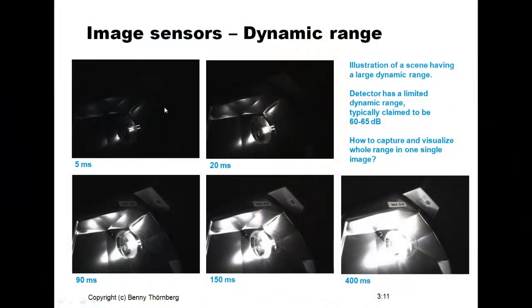To further illustrate this problem, I have chosen a more extreme exposure situation showing a scene of a halogen lamp. What we want to see is the filament inside the light bulb and its structure, while at the same time being able to read the text on the labels and see other parts surrounding the light bulb that are not strongly illuminated. In this series of images at different exposure times, at 5 ms it is possible to have a pretty good view of the filament, and at 400 ms it is possible to easily read the text on the label.